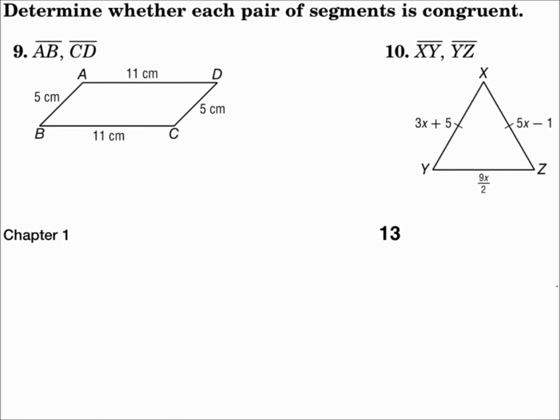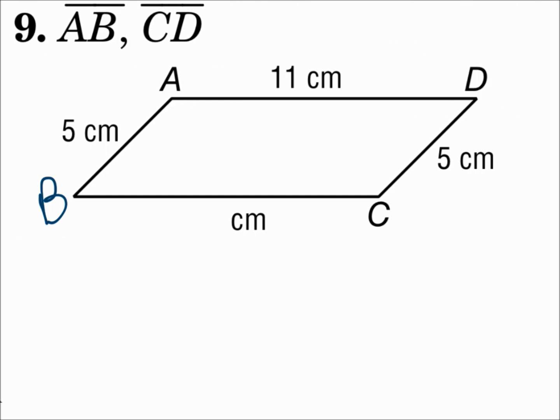Determine whether each pair of segments is congruent. Segment AB and segment CD. Well, segment AB has a measure of 5 centimeters, and segment CD has a measure of 5 centimeters. Their measures are the same, so the segments are congruent.